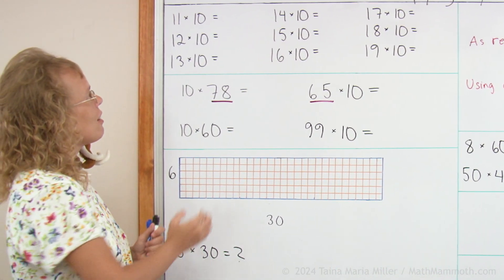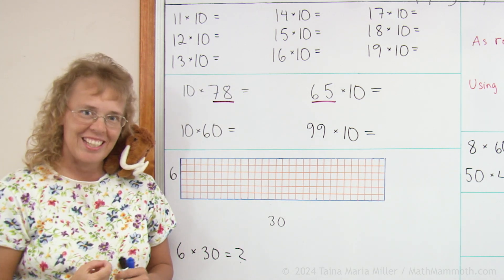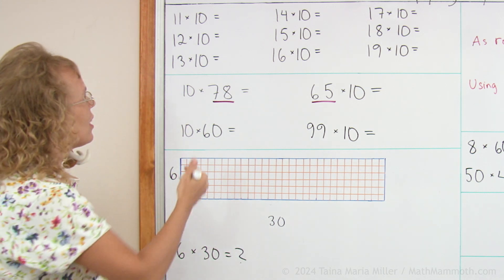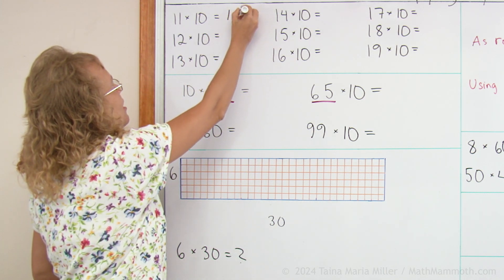Now first of all, I have here part of the multiplication table of 10. So let's fill it in and notice any patterns. 11 times 10 was 110, right?